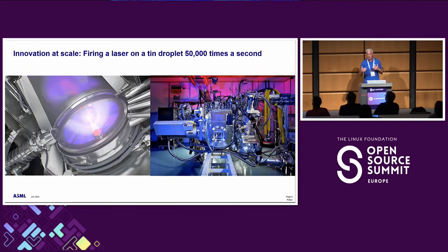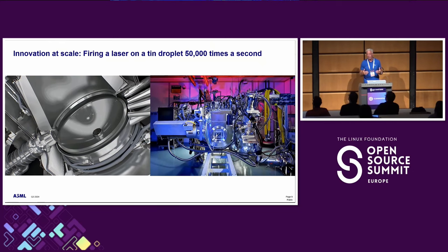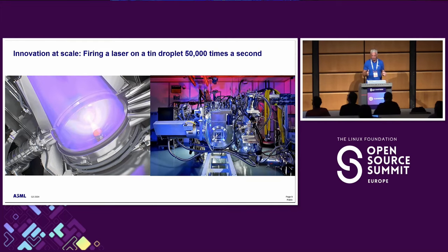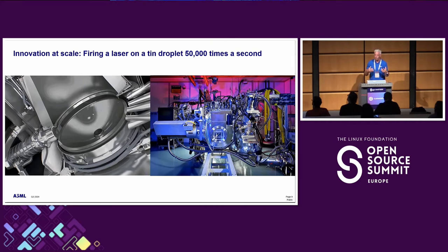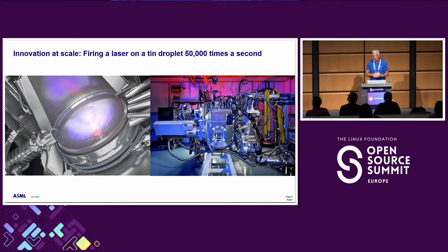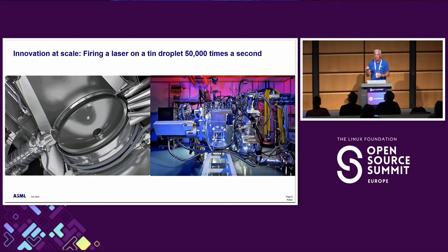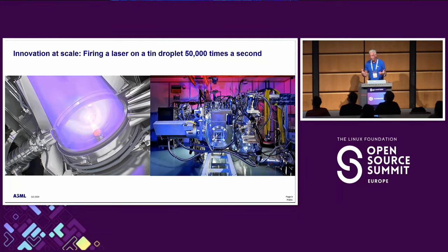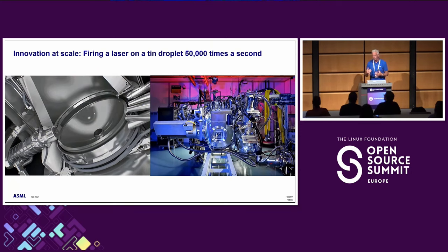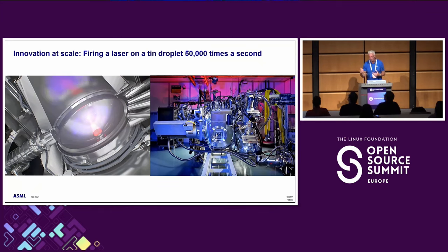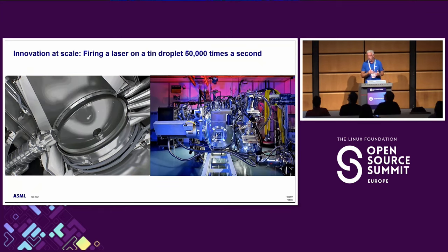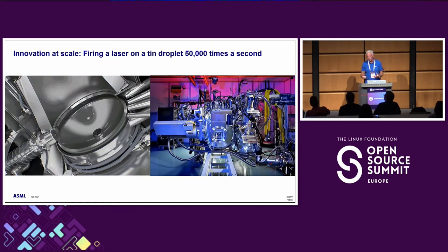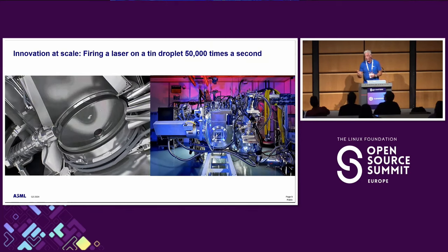On innovation: the source side of our equipment uses a laser that fires at a tin droplet 50,000 times per second to produce plasma and extreme ultraviolet light. We are moving toward 100,000 droplets per second. There is constant R&D to produce more light, more efficiency, more power, to produce more wafers and guarantee the yield of our customers.